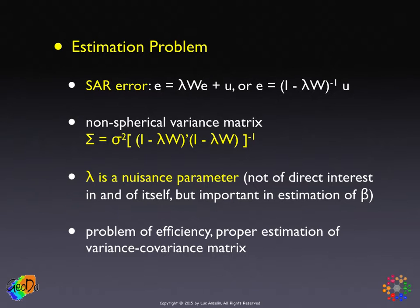Another difference between the spatial lag model and the spatial error model: in the spatial lag model, the spatial autoregressive coefficient rho is of interest in itself as a measure of spatial spillover and spatial multiplier. In the spatial error model, that's not the case. The parameter lambda is not of interest in itself — it's a nuisance parameter. It matters in terms of the efficiency of the estimate for beta. Even if we ignore spatial autocorrelation in the error term, ordinary least squares will give an unbiased estimate for the betas, but not an efficient one, and the standard variance estimate will be incorrect.